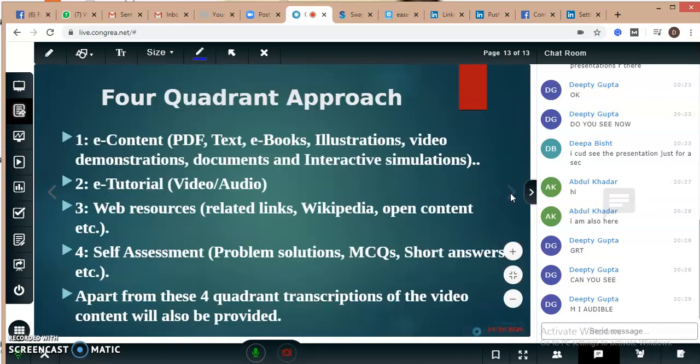And this works on the four quadrant approach. Like in the course, you will get the e-content in PDF or textbook format. And the e-tutorial in video or audio format. And the web resources or the suggested reading. The web links of the resources have been provided for a particular course and subject. And the self-assessment in the form of multiple choice questions or assignments or short answer type. These four quadrants have to be fulfilled.